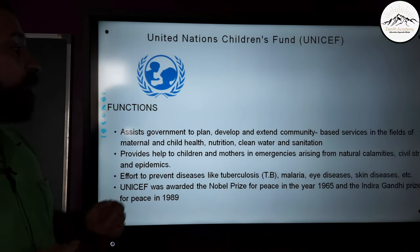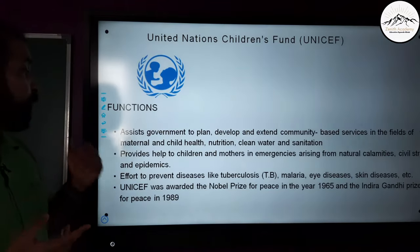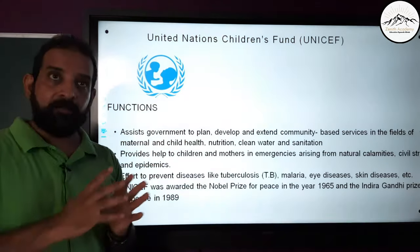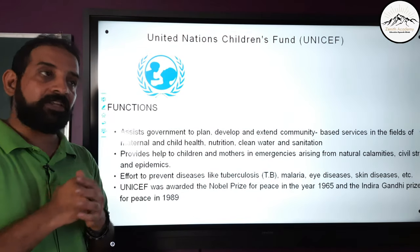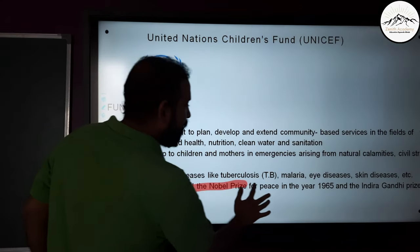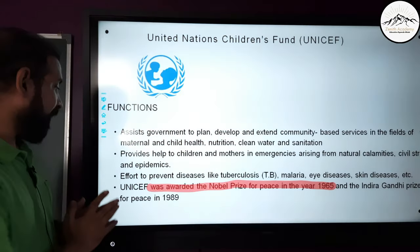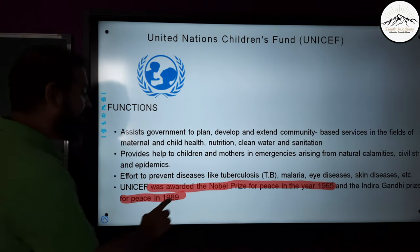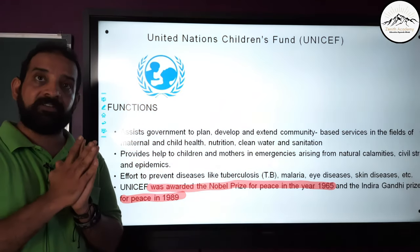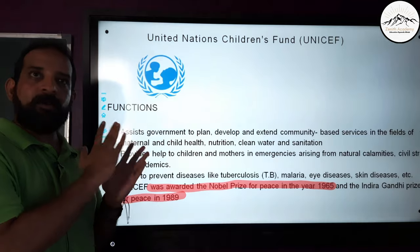UNICEF also makes efforts to prevent diseases like tuberculosis, malaria, and skin diseases. Because of all these functions and efforts with different governments, UNICEF was awarded the Nobel Peace Prize in 1965 and the Indira Gandhi Peace Prize in 1989. UNICEF is one of the most important agencies of the United Nations working with governments of developing nations.